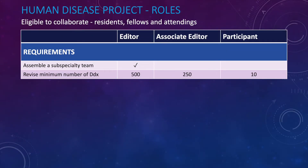Residents, fellows, and attendings can engage at any one of three collaboration levels: editor, associate editor, and participant. Editors will assemble a subspecialty team of collaborators, and the minimum number of differential diagnoses a collaborator is required to revise ranges from 10 to 500 depending on collaboration level.